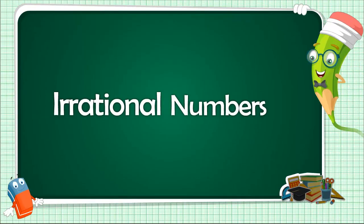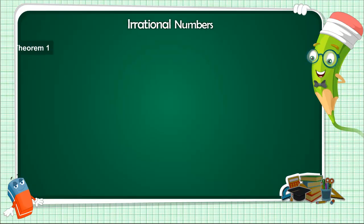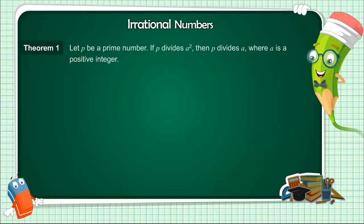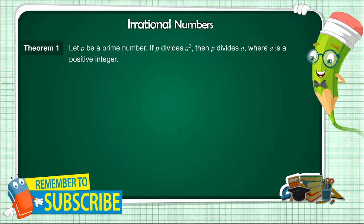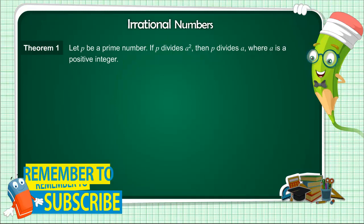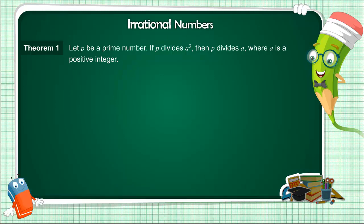Irrational Numbers Theorem: Let P be a prime number. If P divides A squared, then P divides A, where A is a positive integer.